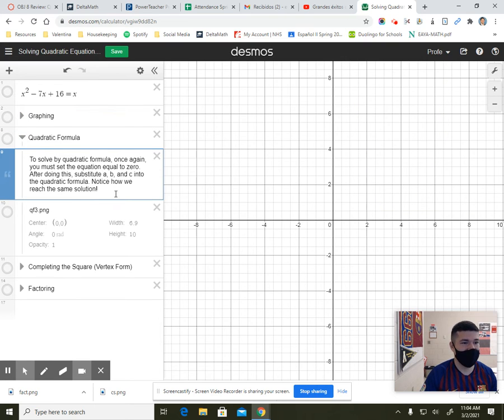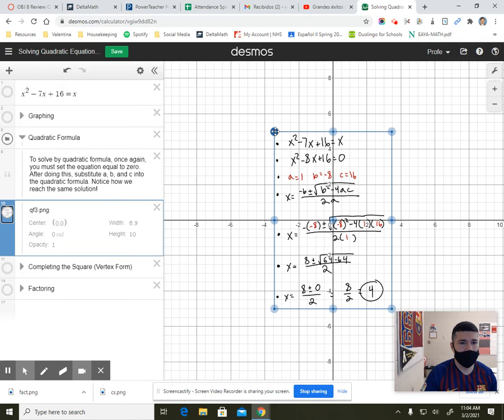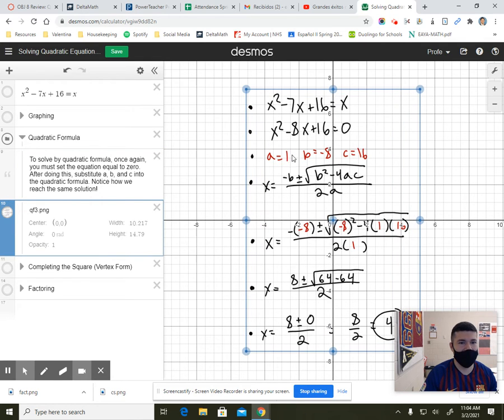With quadratic formula, once again, set it equal to zero. Once you have this equation set equal to zero, you are going to be able to extract your a, b, and c values. Notice that my a is 1. My b is negative 8. That's important because in the first step, I could not tell that the b was negative 8. c is 16. Take these values, substitute them into opposite b plus or minus square root, b squared minus 4ac all over 2a.